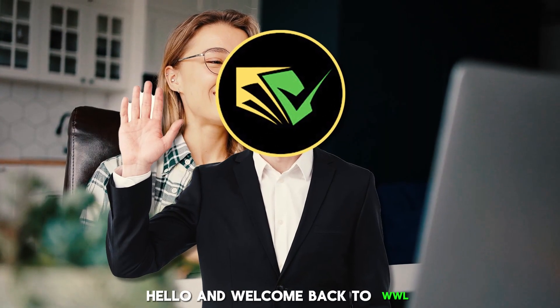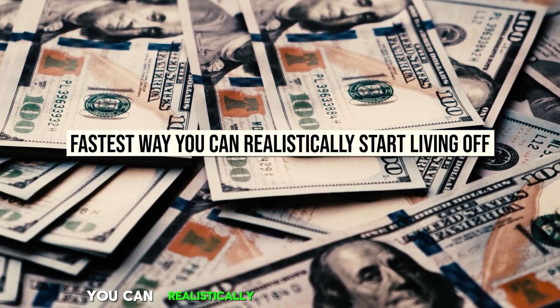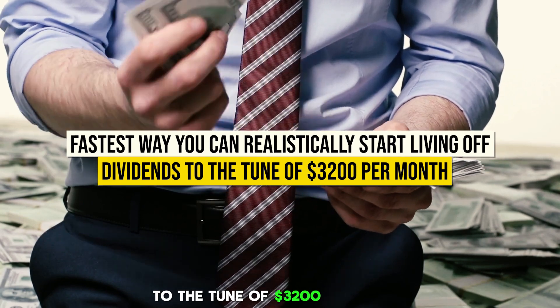Hello and welcome back to WWL. Today we're talking about the fastest way you can realistically start living off dividends to the tune of $3,200 per month.